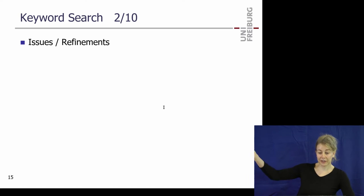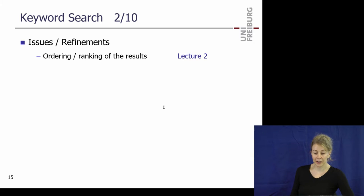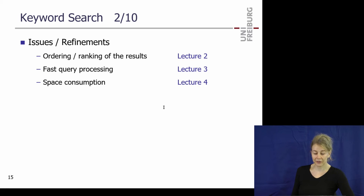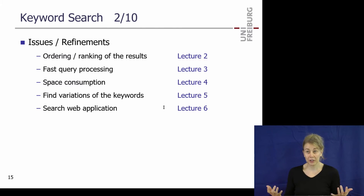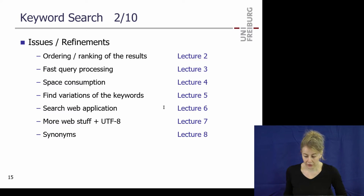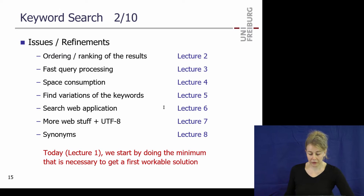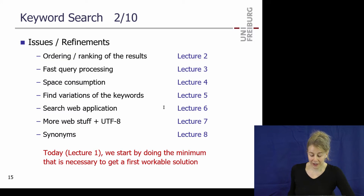This is just the start — first exercise sheet. In upcoming lectures we'll see refinements: lecture two covers ranking, lecture three covers doing it fast, lecture four covers saving space, lecture five covers error-tolerant search, and lectures six and seven cover actually building a search engine. Ranking is important — if you search 'matrix' you expect the Matrix movies at the top, not just any movie with the word 'matrix' somewhere in the description.